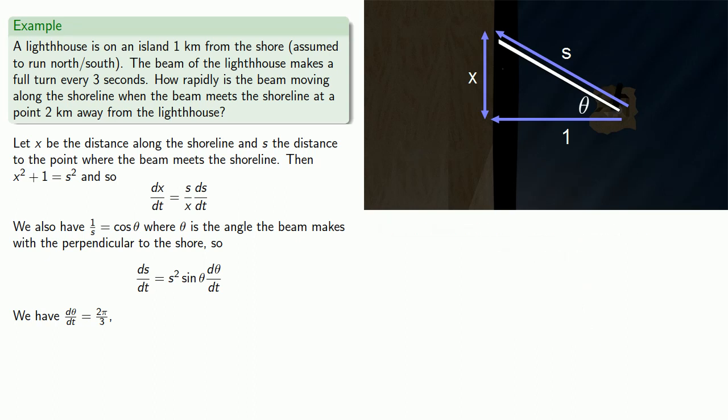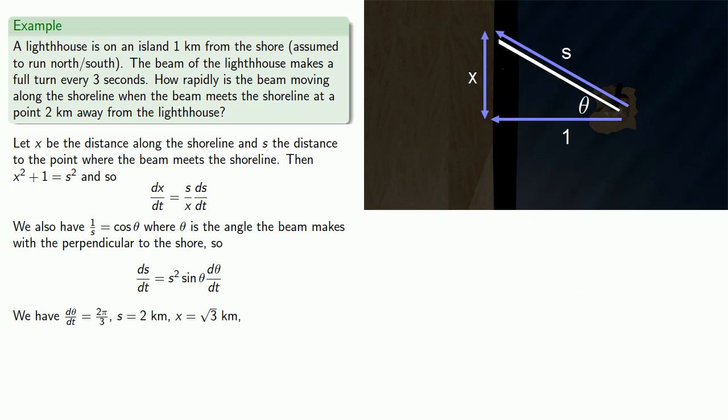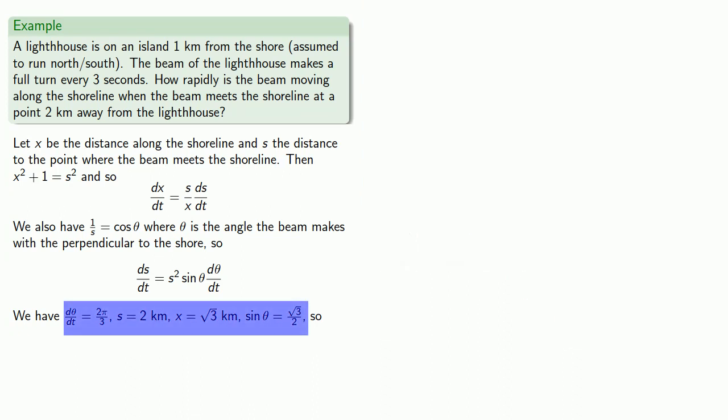So that tells us d theta/dt. We also know s is 2 kilometers because that's the distance to where the beam meets the shoreline. But we do need to know x. We can use the Pythagorean theorem for that. And we also need to know sine of theta, and we can use our right triangle for that. So substituting in these values gives us ds/dt. And then once we know ds/dt, we can substitute it in to find dx/dt.